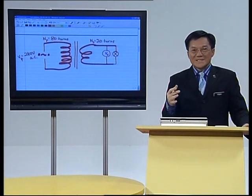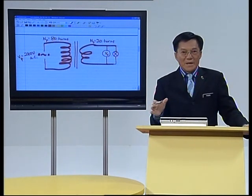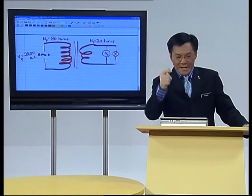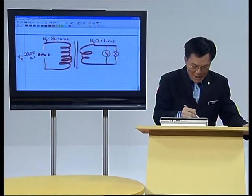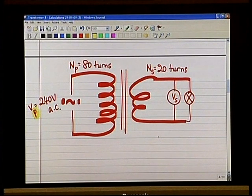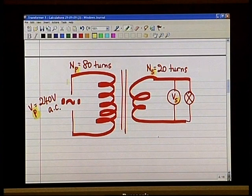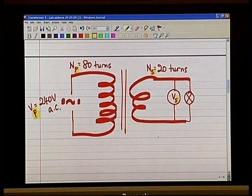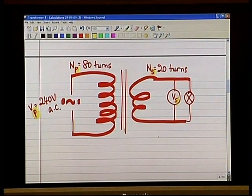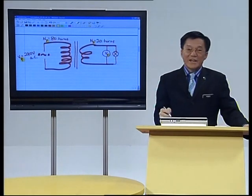For any physics topic, it is very important to write down the subscript. The subscript is very important — 's' for secondary and 'p' for primary. So we have: Np = number of turns in the primary coil, Vp = potential difference in the primary coil, Ns = number of turns in the secondary coil, and Vs = potential difference across the bulb in the secondary coil. Now we are ready to look at the formula.